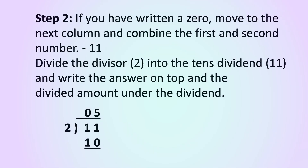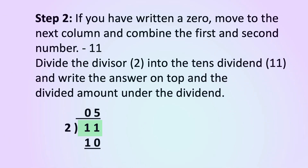Step 2. If you have written a 0, move to the next column and combine the first and second number. So now we have 11. Divide the divisor, 2, into the 10's dividend, 11, and write the answer on top and the divided amount under the dividend.